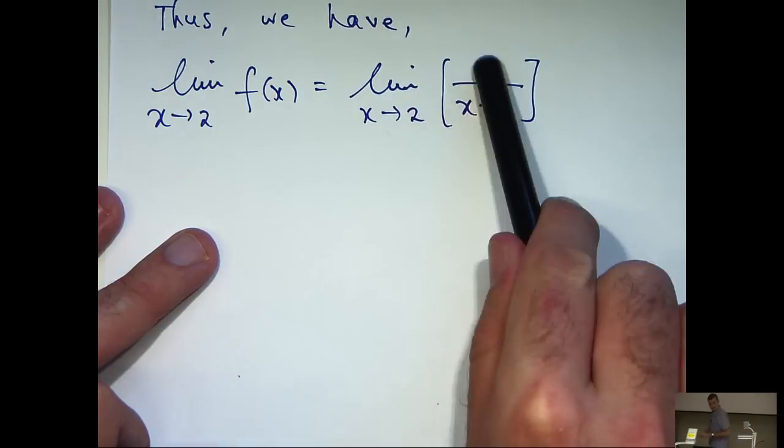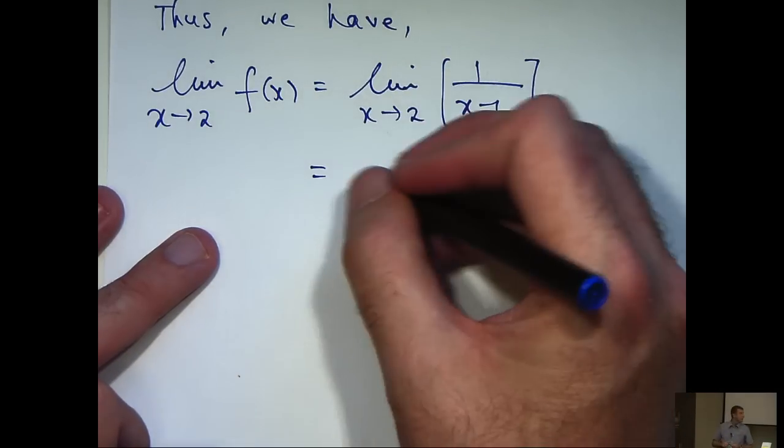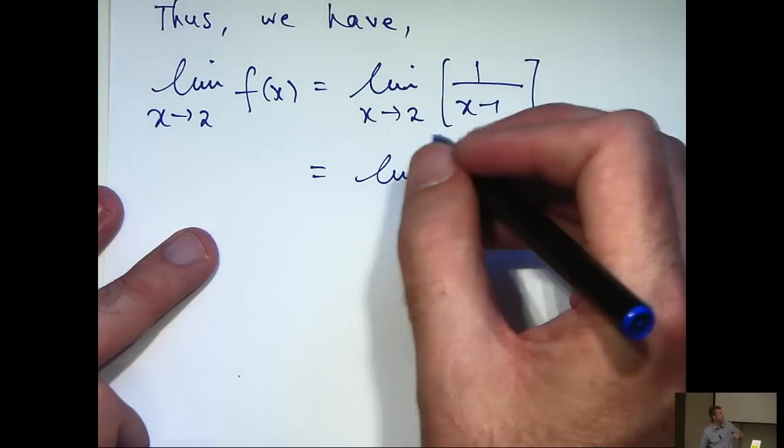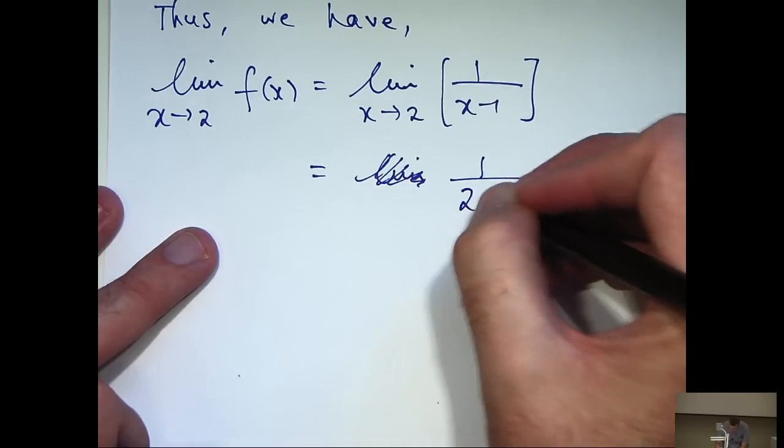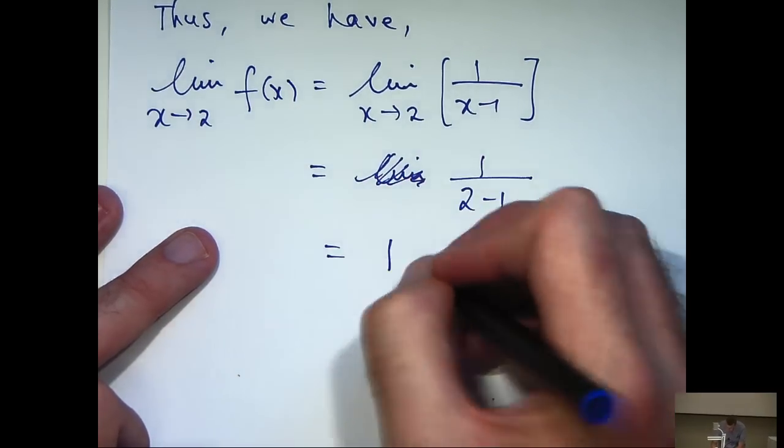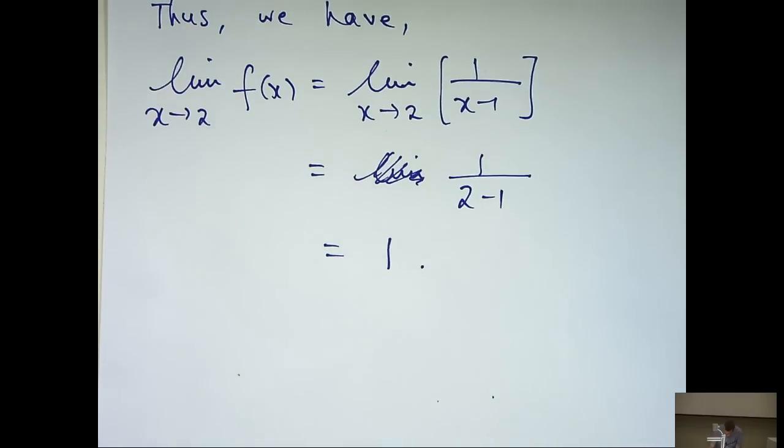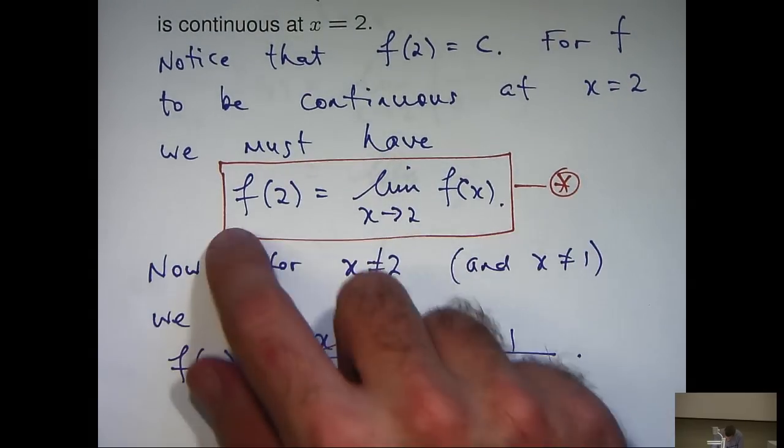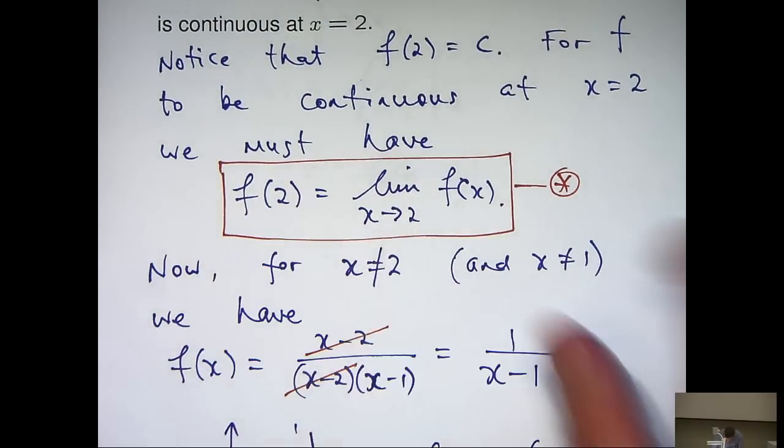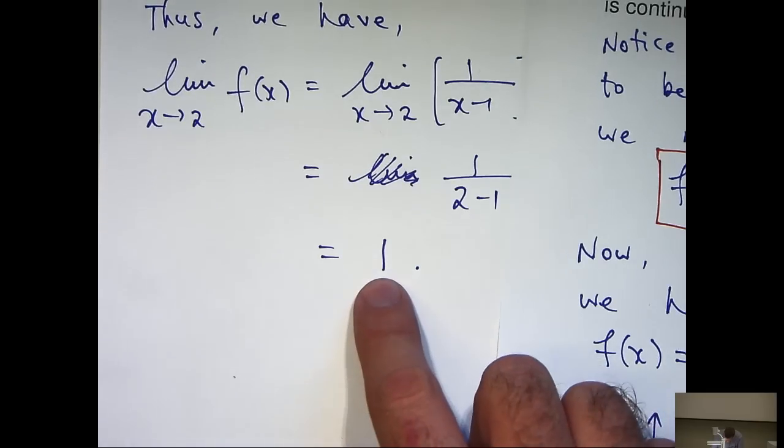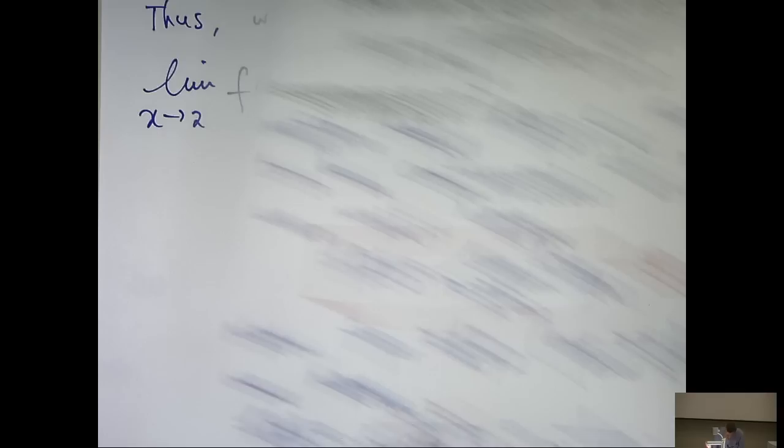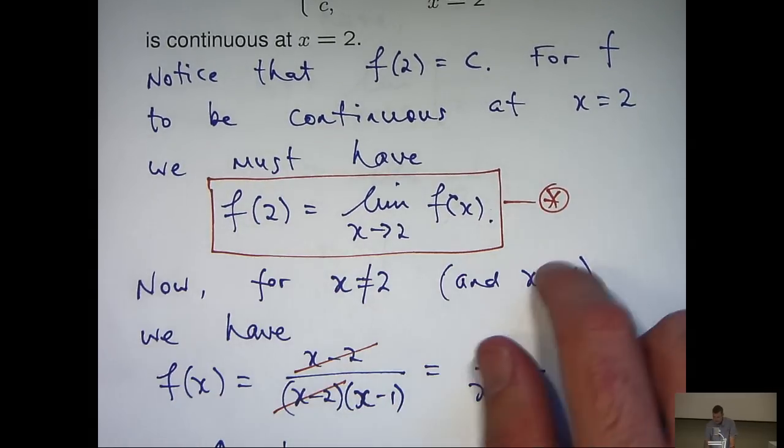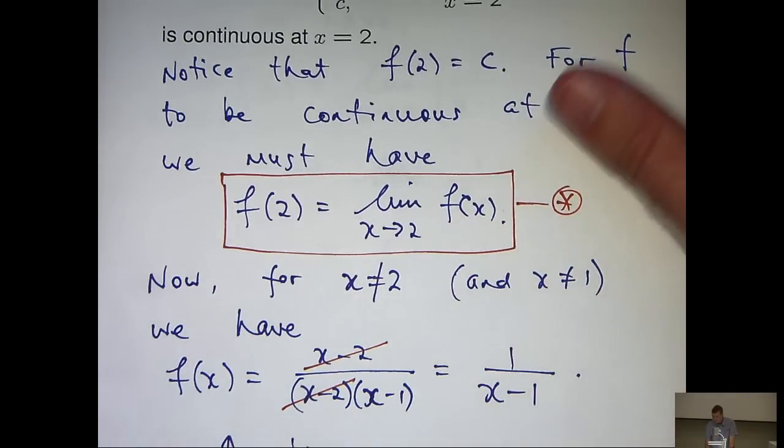Now, I can take the limit of the top and the bottom just via simple limit laws. Actually, we don't need that. So 1 on 2 minus 1. So, I get 1 here. Now, in order for star to hold, I would just define f of 2 to be this value here, 1. That will guarantee me that star holds and f will be continuous at x equals 2.